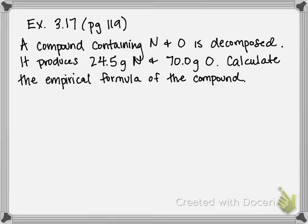The question states a compound containing nitrogen and oxygen is decomposed, produces 24.5 grams of nitrogen and 70 grams of oxygen. Calculate the empirical formula of the compound.